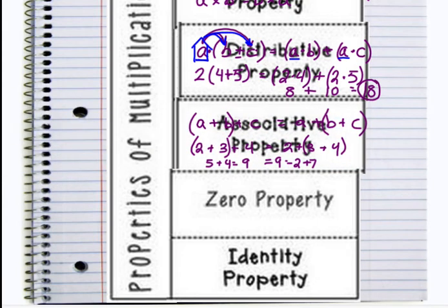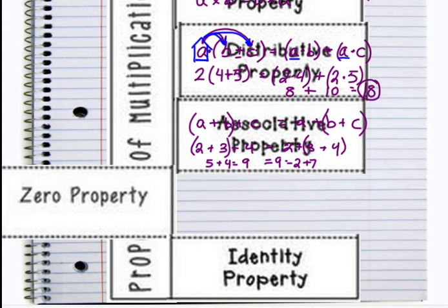Next, we're going to discuss the 0 property. And the 0 property is, again, something that I'm sure you'll see and you'll find it familiar. However, you probably never knew that there was a name for it. The 0 property says that A times 0 equals 0.